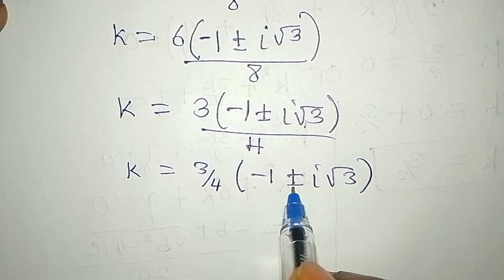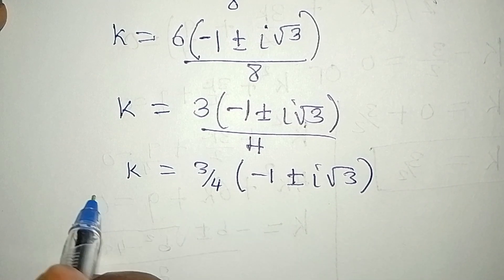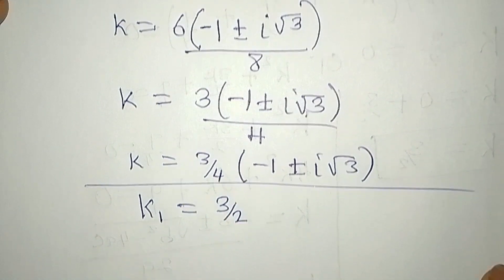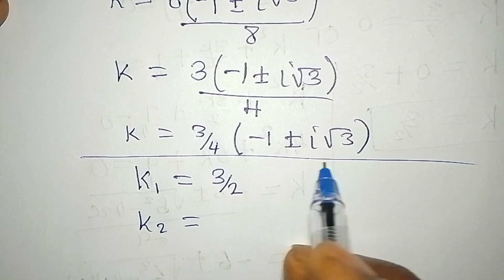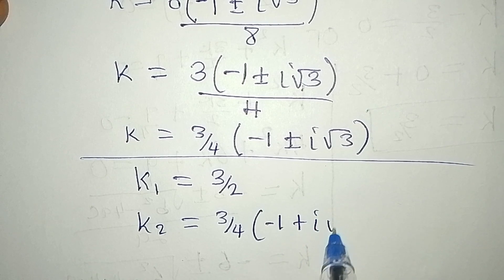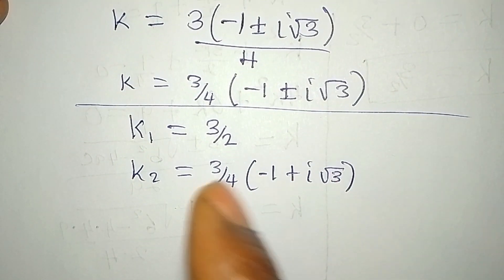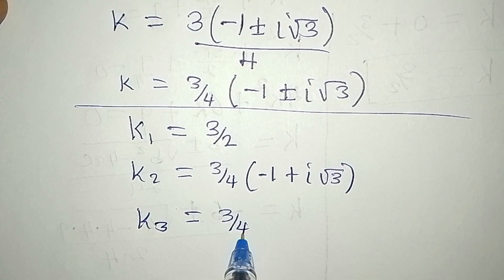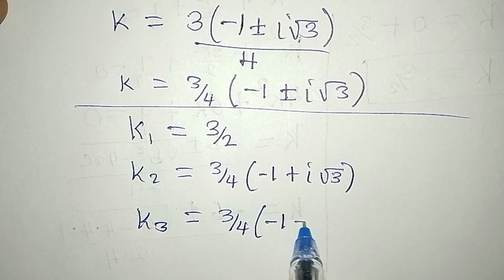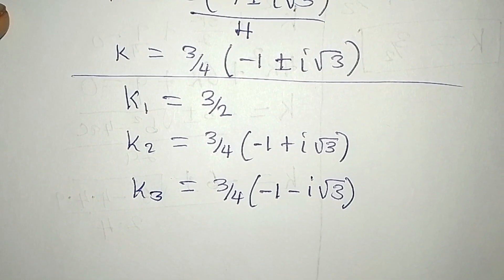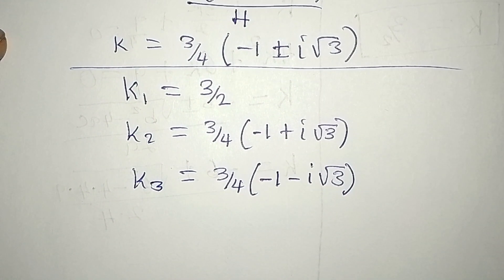Now let's bring the three solutions together. k₁ = 3/2. k₂ = (3/4)(−1 + i√3). k₃ = (3/4)(−1 − i√3). So from here we have three solutions. Thank you for watching — if you love what I've done, subscribe to my channel.